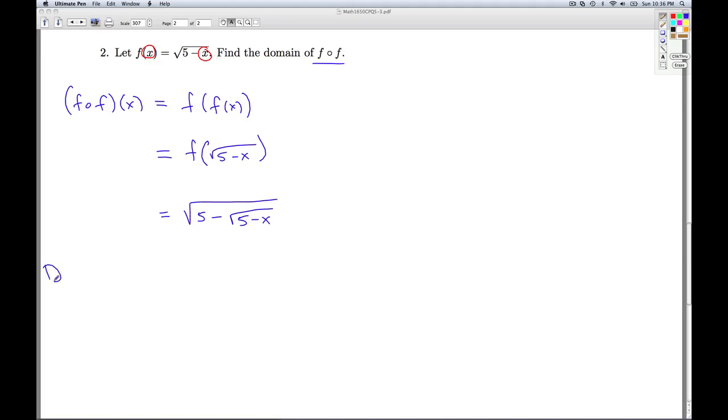So we're asked to find the domain of this. Okay, so what do I do? Well, there's no denominators, thankfully, so we don't have to worry about those. But I do have two radicals. I've got nested radicals here. So let's look at one radical at a time.